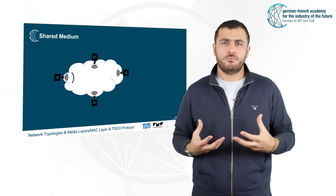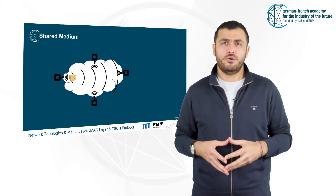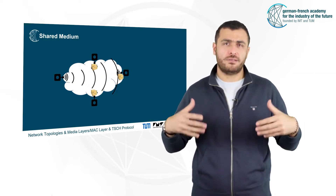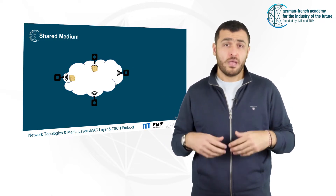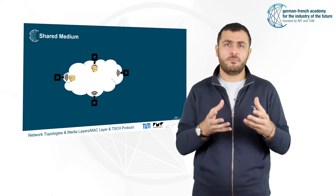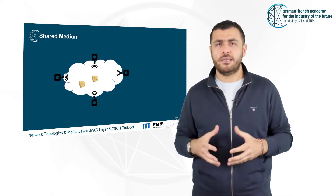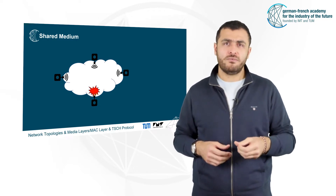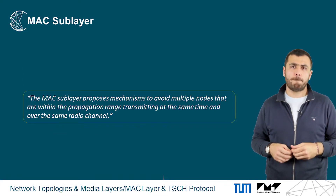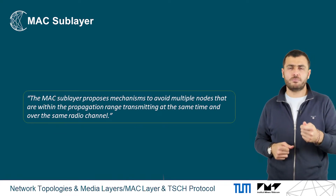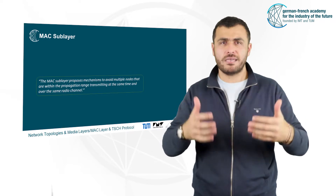Using a wireless medium, communications are broadcast by nature. This means that all nodes within the propagation range of the transmitter can potentially hear a transmission. However, if several nodes transmit a frame at the same time over the same radio channel, there will most likely be a collision, and reception of the transmission will be impossible. Therefore, the MAC sublayer proposes mechanisms to avoid multiple nodes transmitting at the same time over the same radio channel.